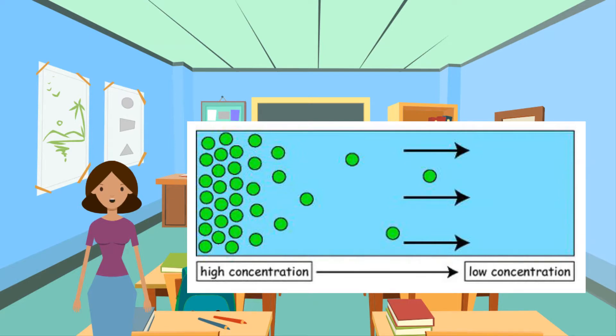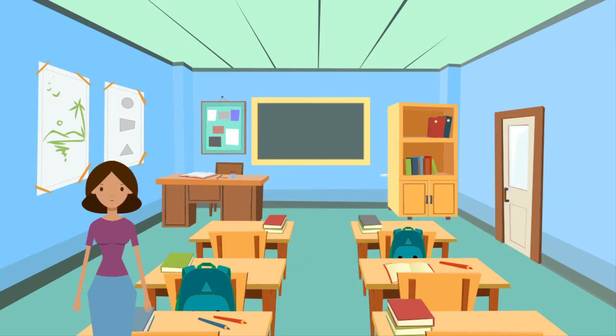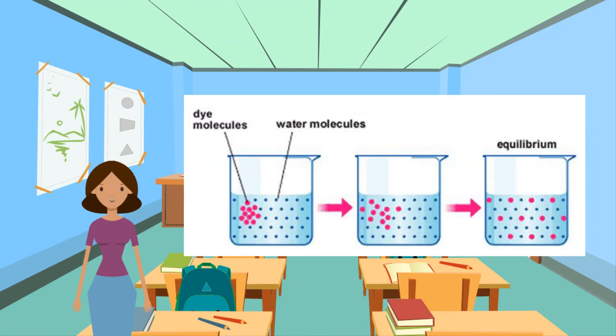Particles are said to diffuse down a concentration gradient, from an area of high concentration to an area of low concentration. Diffusion is how molecules of oxygen and carbon dioxide can move between the alveoli and the blood, and also how molecules of digested nutrients move from the intestines into the blood.